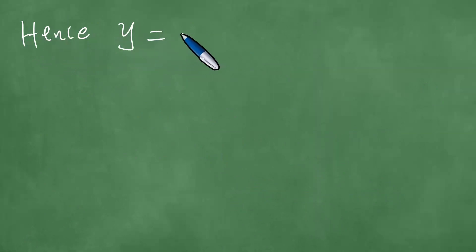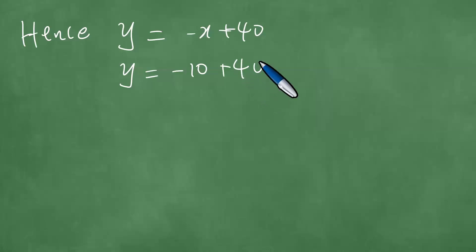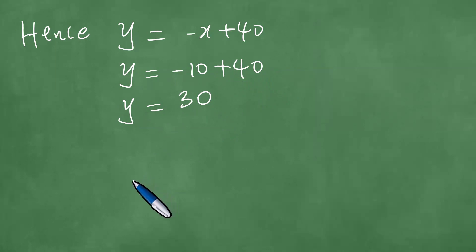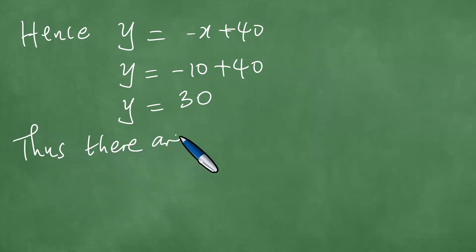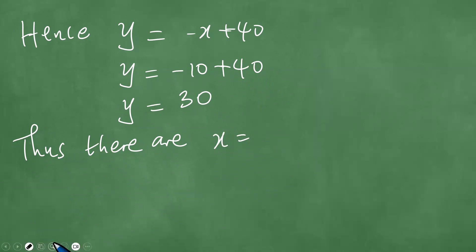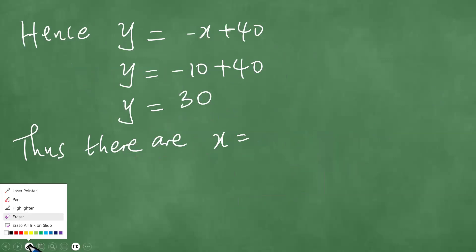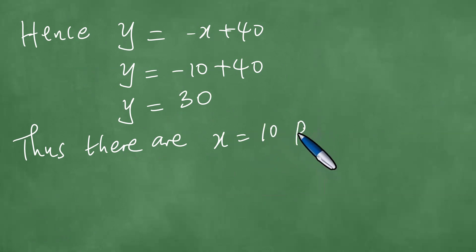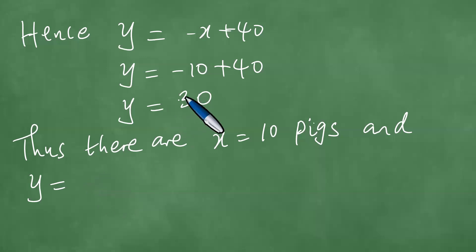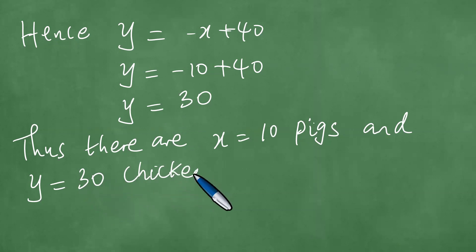50 minus 40 is actually 10, so X equals 10. Hence it follows that Y equals minus X plus 40, and this means Y equals minus 10 plus 40, so that Y equals 30. Therefore X equals 10 pigs, because X represents the number of pigs, and Y equals 30 chickens.